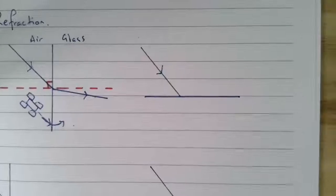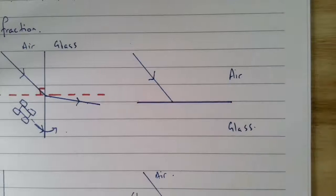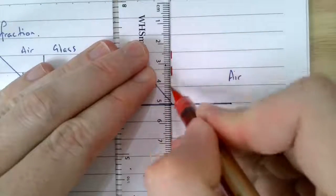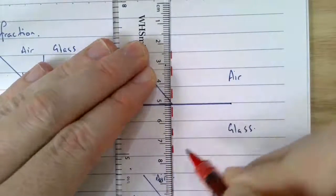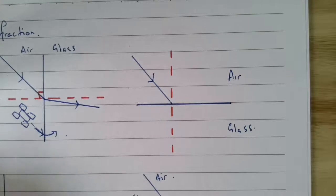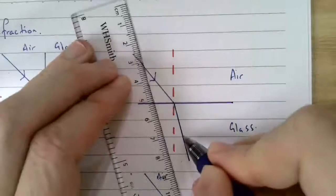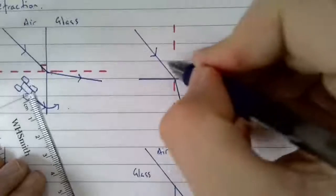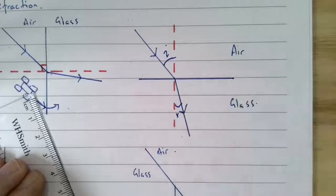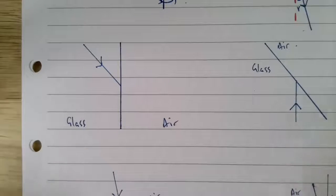For the second example, we're going air to glass again. First, draw the normal — the line perpendicular to the surface where the light hits. The light slows down, so it bends towards the normal. You can see therefore that the angle of incidence is larger than the angle of refraction.